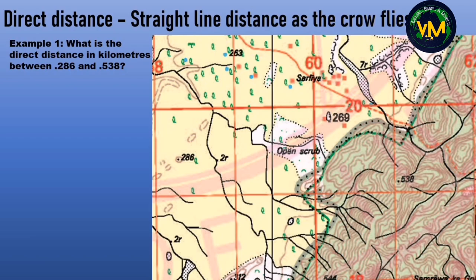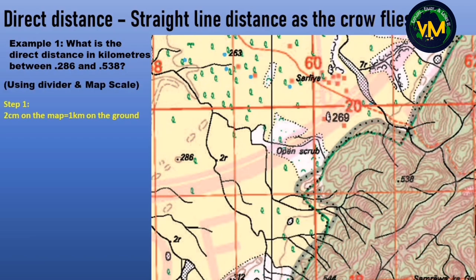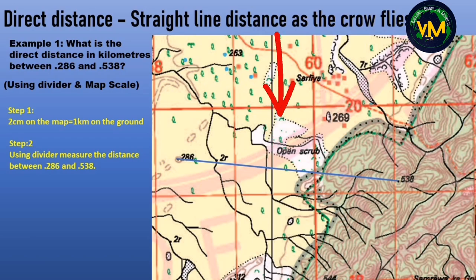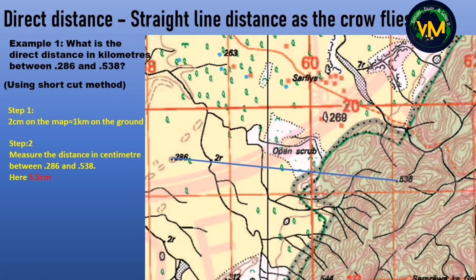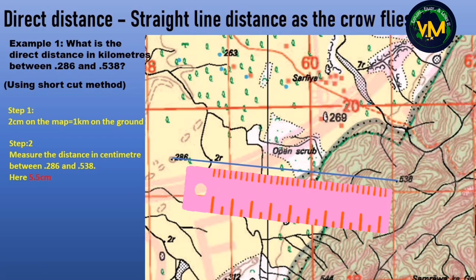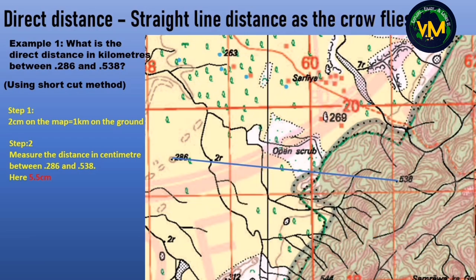Let us have a recap. Step 1: write the statement — 2 centimeters on the map equals 1 kilometer on the ground. Step 2: using a divider, measure the distance between spot height 286 and 538, keep the divider on the map scale, and read directly in kilometers and meters. Or use the shortcut method — measure the distance in centimeters using a ruler between spot height 286 and 538, getting 5.5 centimeters. Divide by 2 because the map scale is 2 cm equals 1 km, giving 2.75 kilometers.